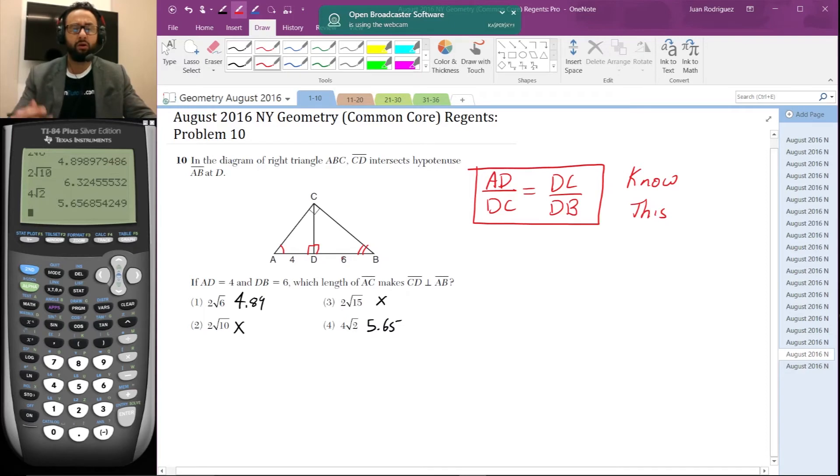So that means that all the sides are proportional. So if you do proportions of sides, that's yet another way of getting the answer to this question. So we're going to use this proportion that's very useful to us. And we plug in numbers. Let's see. AD is four, DC is unknown. And DC is still unknown. And then DB is six.